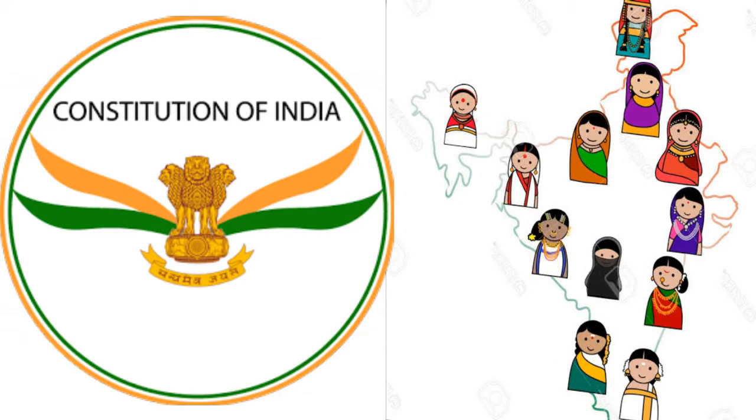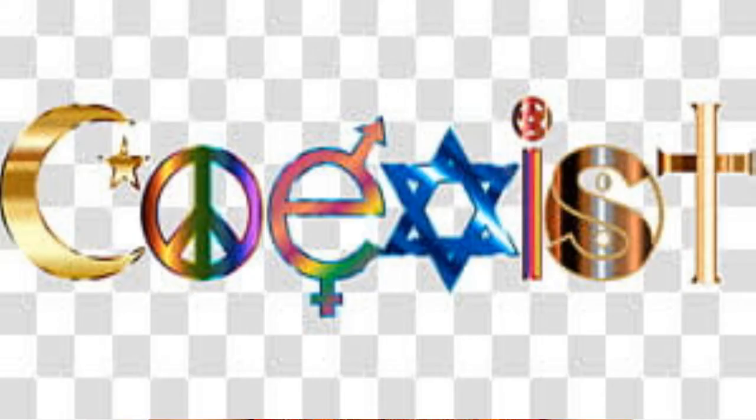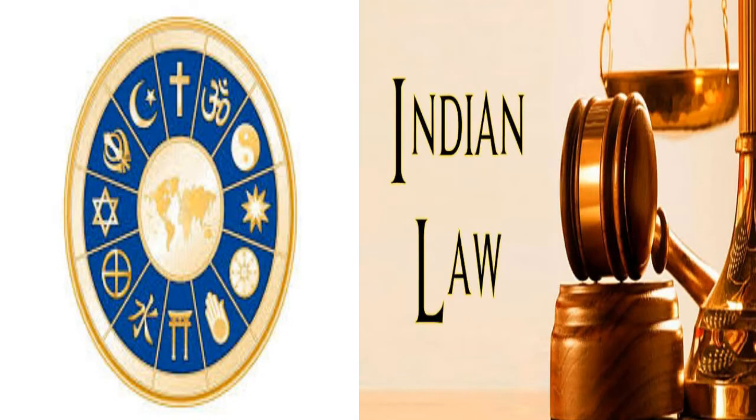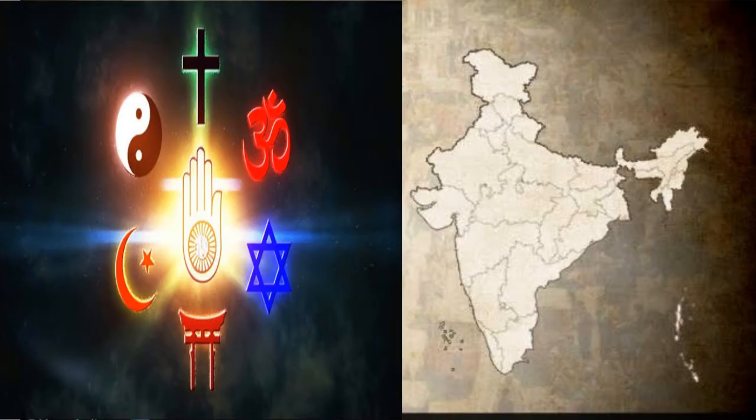As per our constitution, our government cannot promote any particular religion or imply any policies which promote one religion and discriminate between religions. A secular state is one where the state neither favors any religion nor discriminates against any religion, and all citizens belonging to different religions are equal in the eyes of law. So we can say that India is a secular state where every religion has the right to prosper and grow. In general terms, secularism means religion is separated from the state.